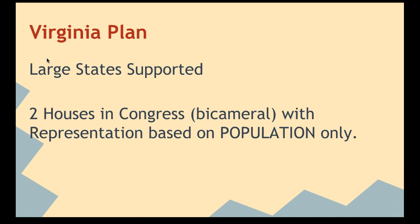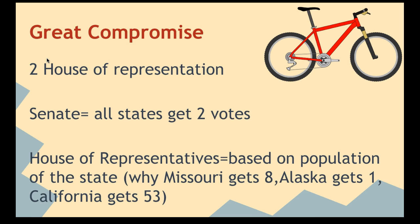The compromise is they're going to have two houses, bicameral. The first one is called the Senate, and each state gets two votes — just like the New Jersey Plan, but upping it from one vote to two. Today we have two senators that go to Congress, so every state gets two senators.